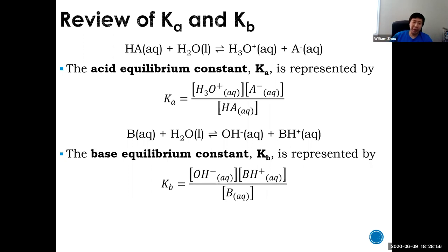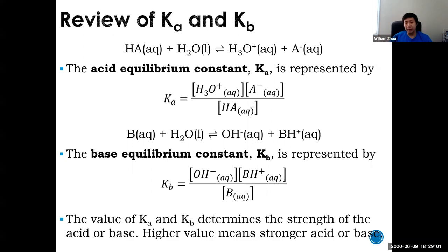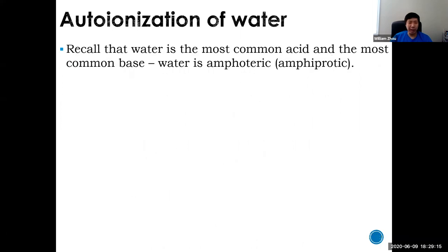Ka and Kb can determine the strength of the acid and strength of the base. If you have a higher value for these two, that means you have a stronger acid or base compared to a lower value. Also, water is the most common acid and the most common base. Water can be an acid and a base — it is able to donate a proton or accept a proton. So as a result, water is amphoteric.